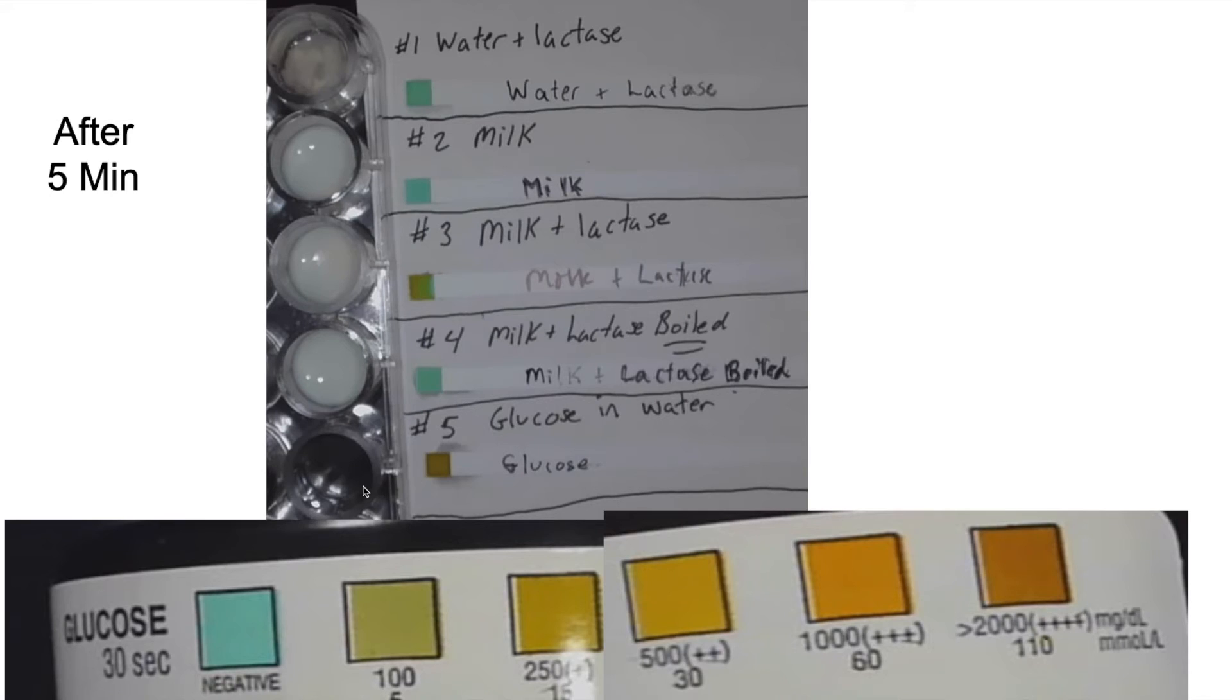So whenever we do an experiment, we need a basis of comparison. There's actually two types of controls. There's a positive control and a negative control. A positive control is where you expect it to change. Glucose in the water is considered a positive control. Number one and number two are negative controls because we don't really expect anything to change.